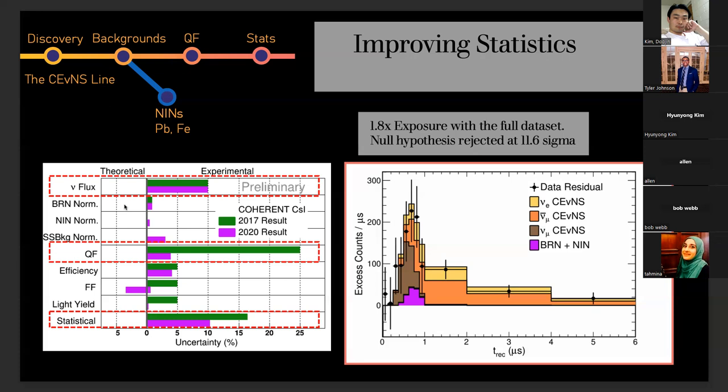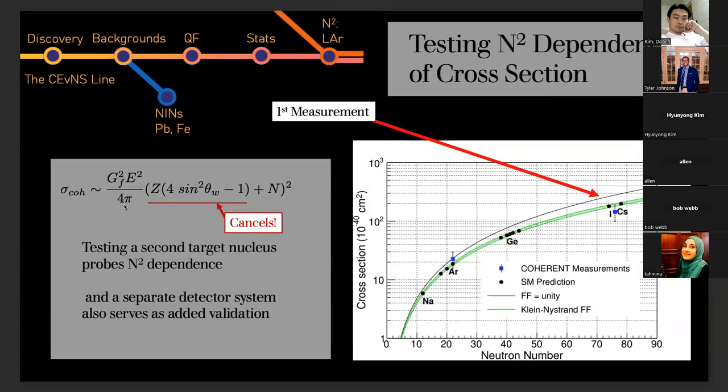We can actually start to do some multi-nucleus studies. This is coming down to the quirk that the cross section for CEvNS is proportional to the neutron number squared, where it just so happens that sine squared of the weak mixing angle is about 0.24. So you get this cancellation of the number of protons. The cross section predominantly corresponds to the number of neutrons. This becomes a really nice test of whether or not we're adhering to this cross section in the standard model by mapping out the neutron number squared of many nuclei. This first nucleus of cesium iodide lies right within the prediction of where we'd expect. We can start to add different detection materials to start filling that out and understanding if there are deviations.